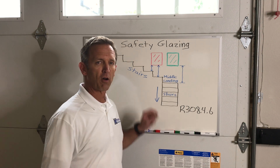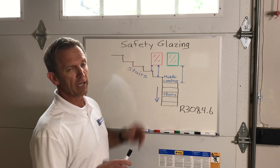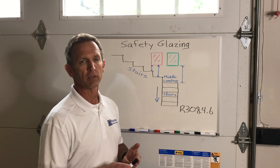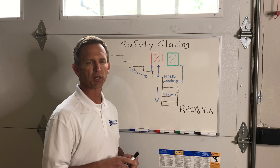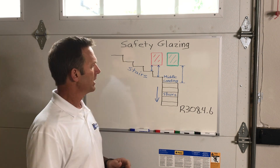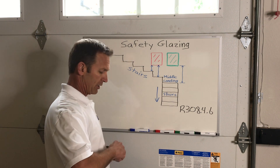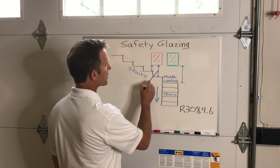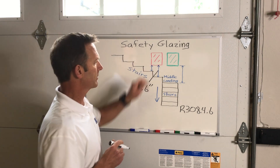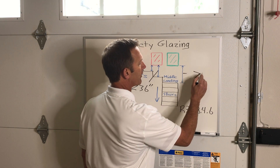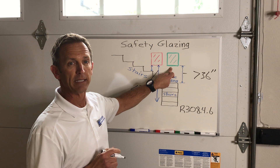Here's an illustration of the scenario where we've got a flight of stairs coming down to a mid-landing, and then continuing on to the first floor. Section 308.4.6 addresses safety glazing for intermediate or middle landings. Basically, any glazing within less than 36 inches from the walking surface has to be addressed as a hazardous location. So if a window is less than 36 inches above the landing, it likely needs tempered glass. However, if it's greater than 36 inches above the walking surface, it's not a hazardous location.